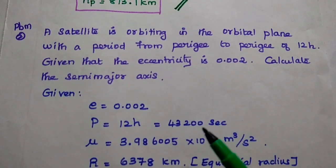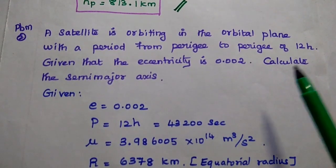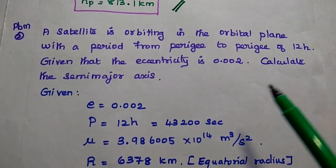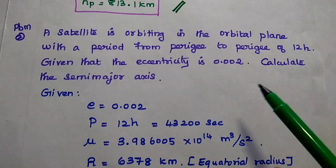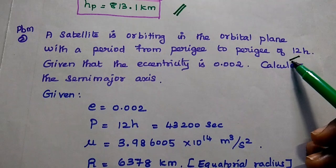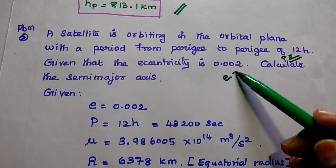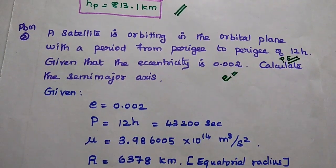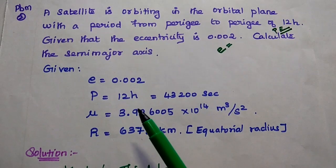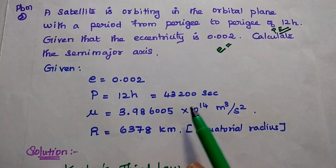The next problem: a satellite is orbiting in the orbital plane with a period from perigee to perigee of 12 hours. Given that the eccentricity is 0.002, calculate the semi-major axis. In this problem the period from perigee to perigee is nothing but the orbital period capital P. The given data is E equal to 0.002 and P equal to 12 hours, which can be written as 43,200 seconds.